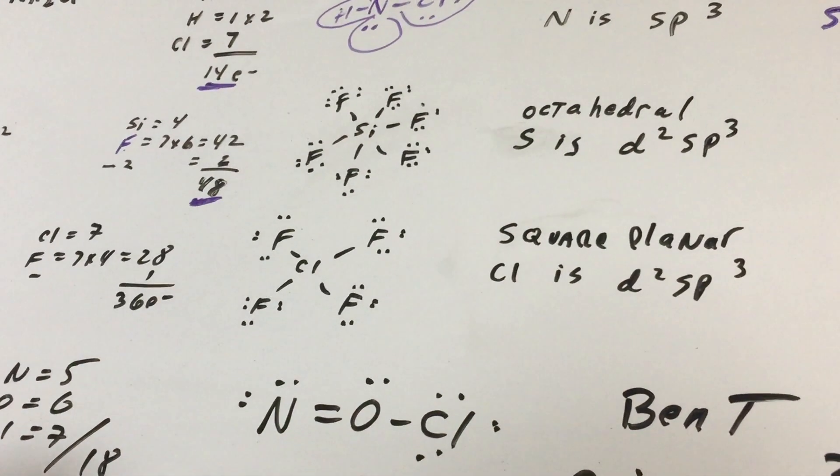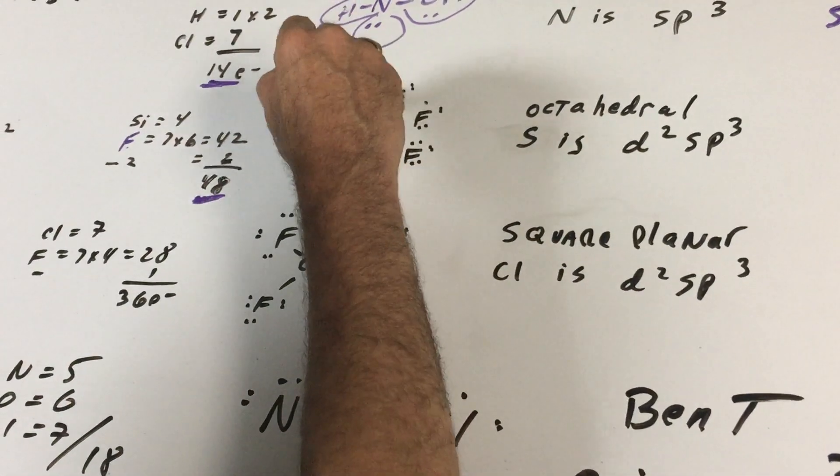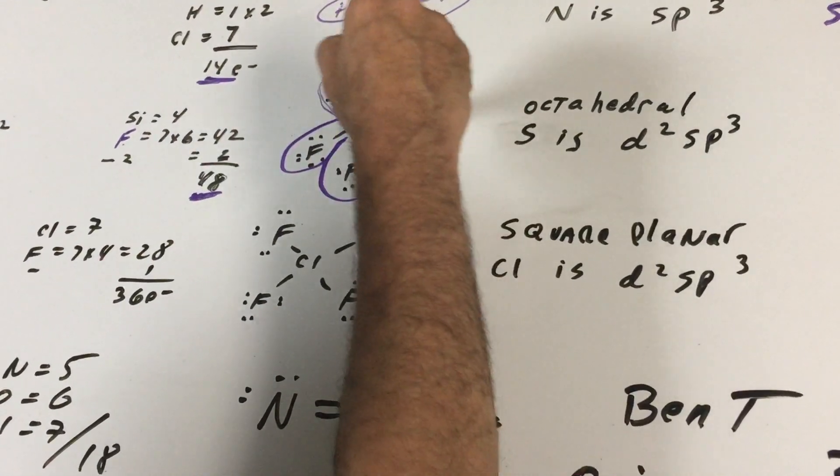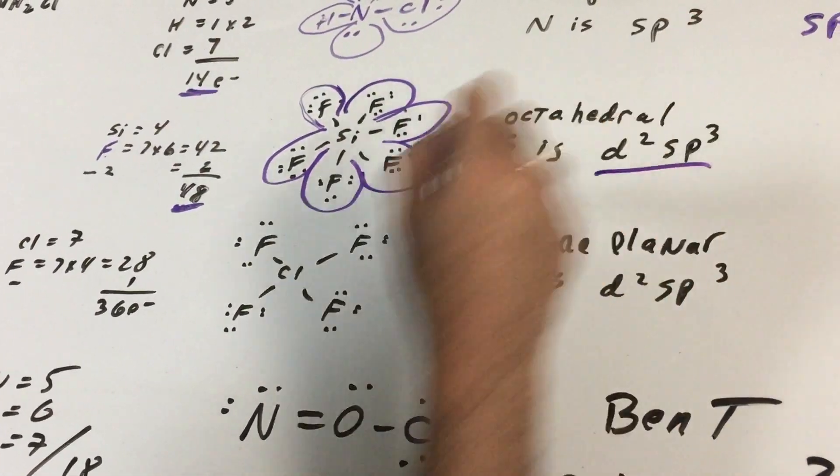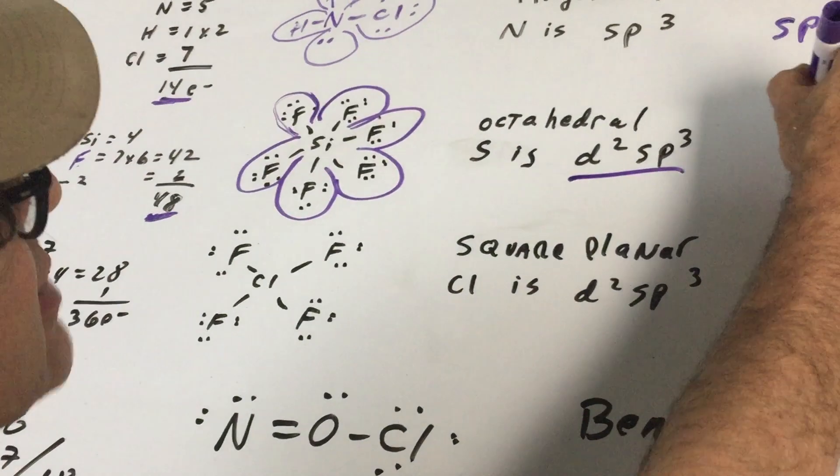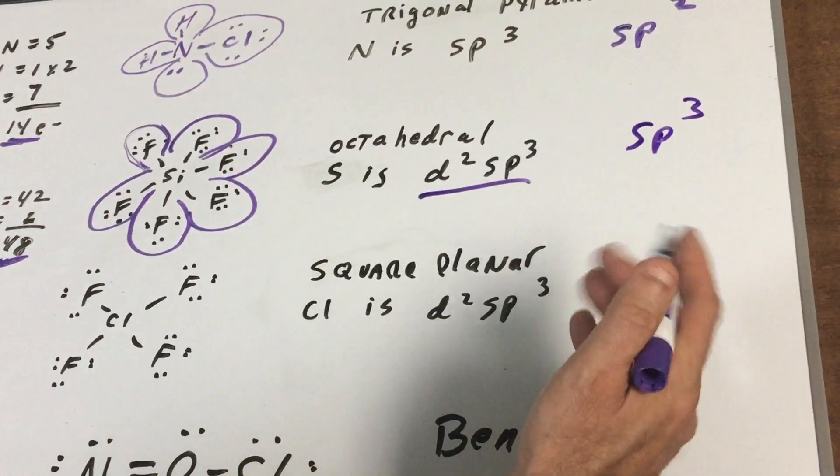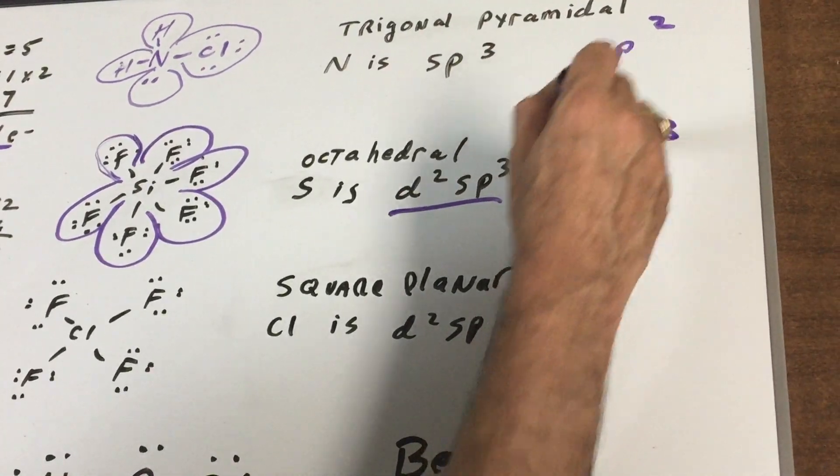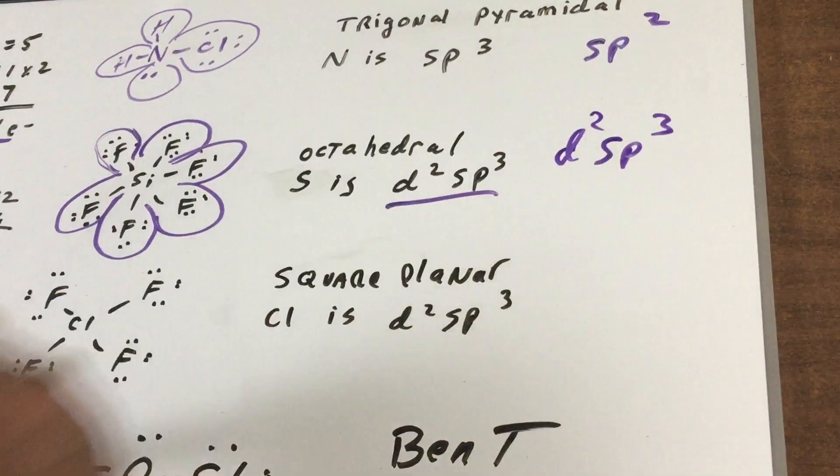And if we do the shape we have one area, two, three, four, five, there's six areas. Now if there's six areas and you first wrote sp3, you would have seen that there is four and you needed two more. So those two have got to come from the d orbitals, so this would be a d2sp3 hybrid.